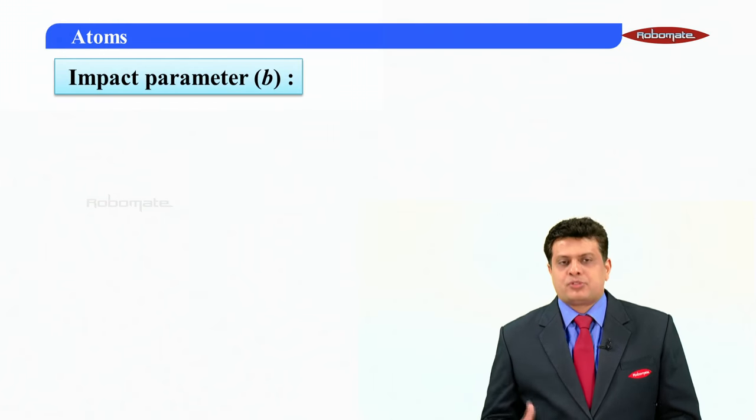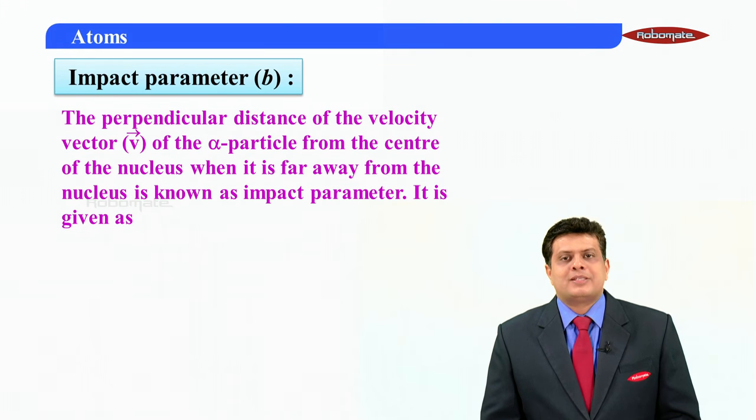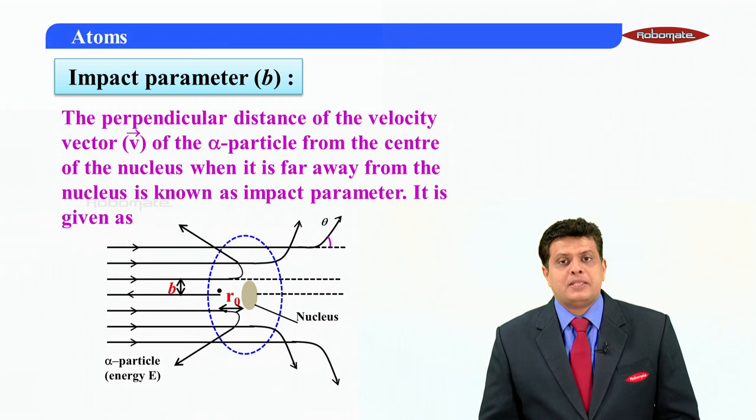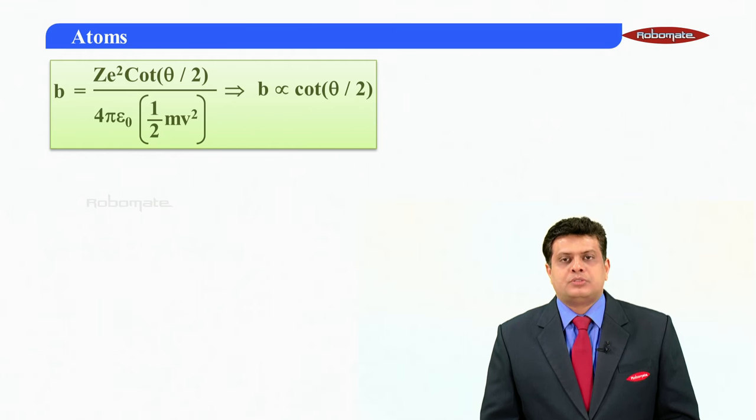Let me tell you what is impact parameter, because usually the questions are asked on these two things. The perpendicular distance of velocity vector of the alpha particle from the center of the nucleus when it is far away from the nucleus is known as impact parameter. And how do I give that value? See that B is the impact parameter, and I want to give the expression for impact parameter, Z-e-square divided by 4 pi epsilon-not cot theta by 2 in the numerator, divided by half mv-square. We can always replace it by K.